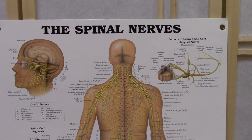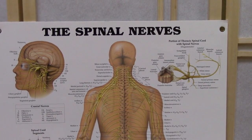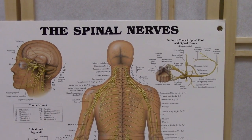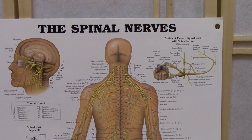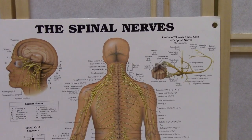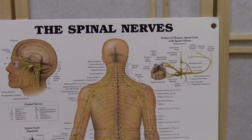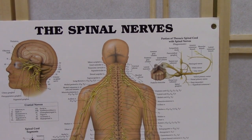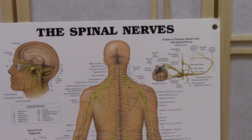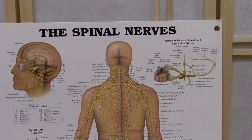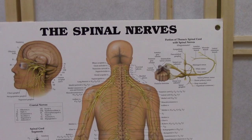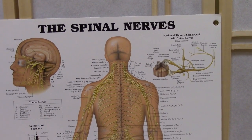Here's a short anatomy lesson to illustrate the relationship between your spinal column and your peripheral nerves — the nerves that go into your extremities, your arms and your legs.